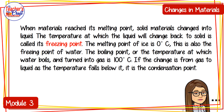When materials reach their melting point, solid materials change into liquid. The temperature at which liquid changes back to solid is called its freezing point. The melting point of ice is 0 degrees Celsius, which is also the freezing point of water. The boiling point, or the temperature at which water boils and turns into gas, is 100 degrees Celsius. If the change is from gas to liquid as the temperature falls below it, it is called the condensation point.